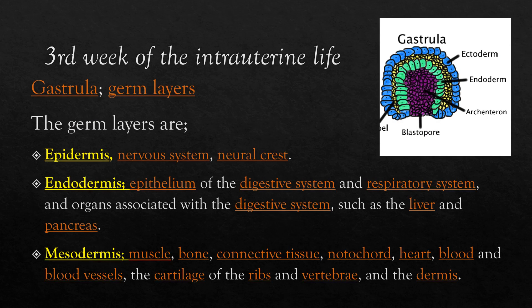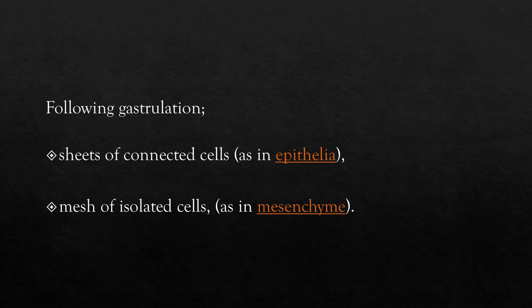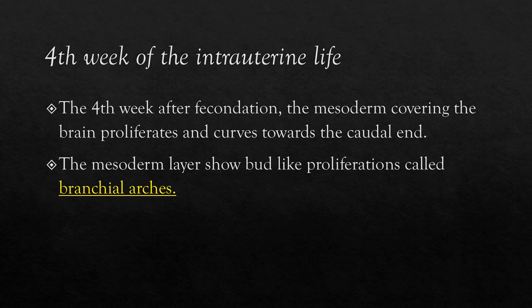The embryonic disc becomes a three-layer unit: ectoderm, endoderm, and mesoderm. These layers will form different parts of the body. Following gastrulation, cells in the body are either organized into sheets of connected cells as in epithelia, or as a mesh of isolated cells such as mesenchyme. During the fourth week after fecundation, the mesoderm covering the brain proliferates and curves towards the caudal end. The mesoderm layer shows bud-like proliferations called branchial arches.